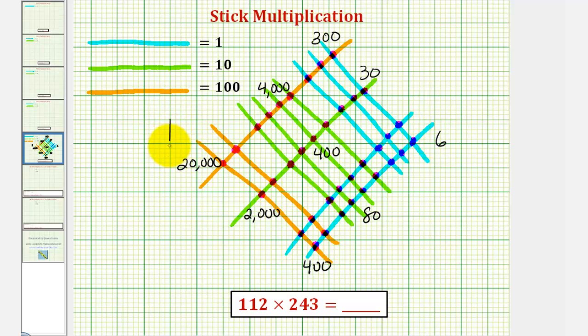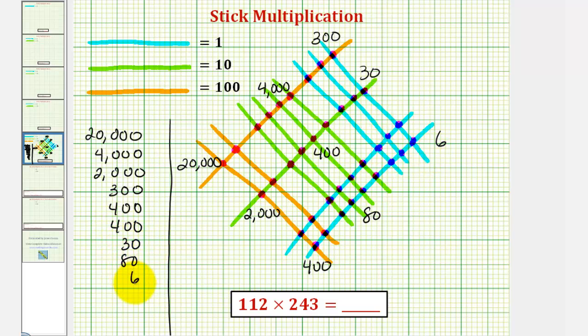Which means 112 times 243 equals 20,000 plus 4,000 plus 2,000. So we have that plus 300 plus 400 plus 300 plus 400 plus 30 plus 80 plus 6, which equals 27,216.